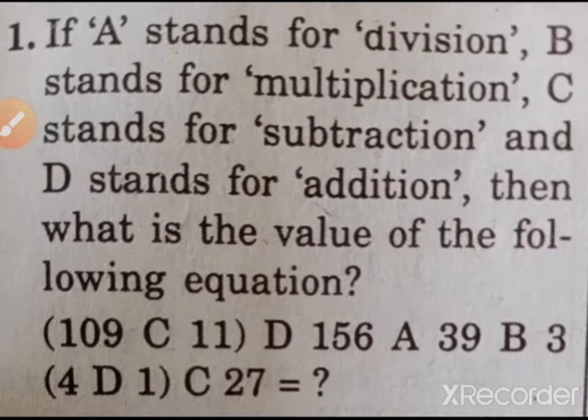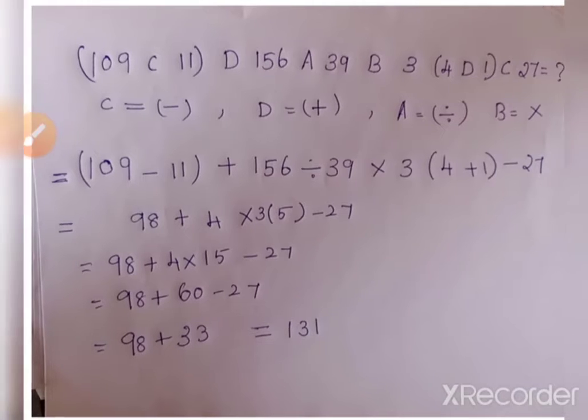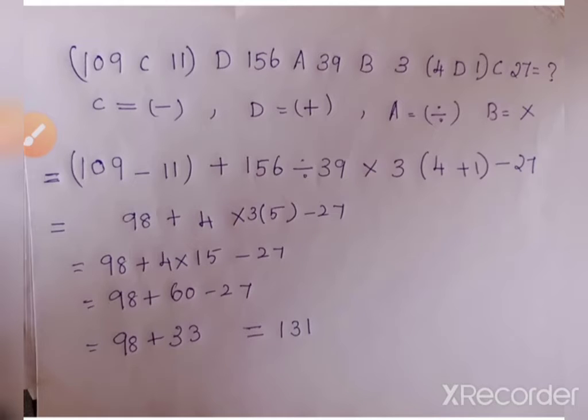This is the question. How do we solve the problem? 139 into 3 into 4 plus 1 minus 27.